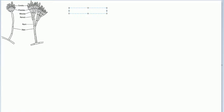Now, reproduction of Penicillium. Three types of reproduction are present in Penicillium: vegetative reproduction, asexual reproduction, and sexual reproduction.